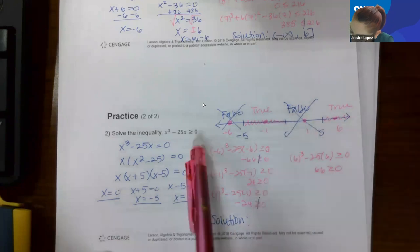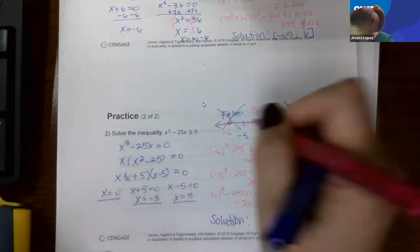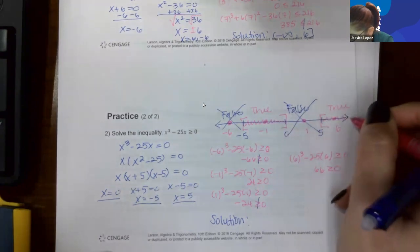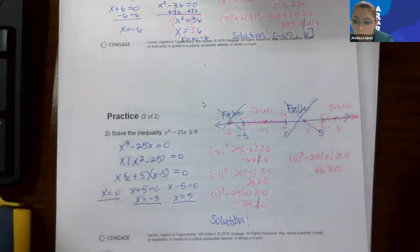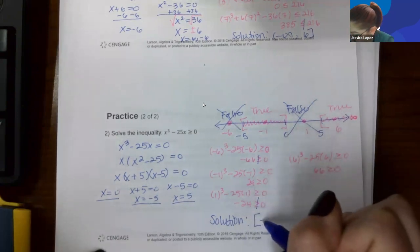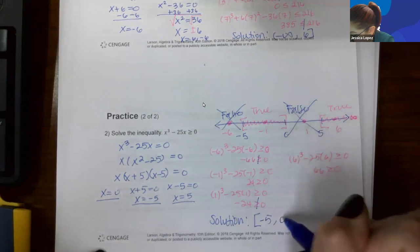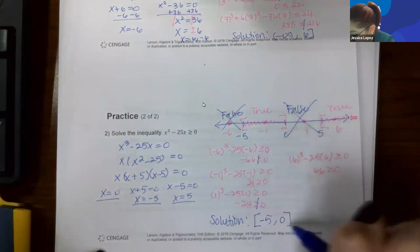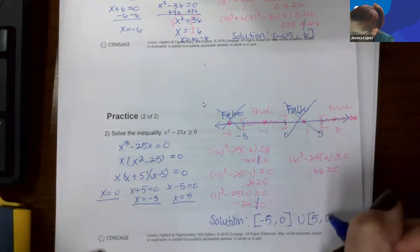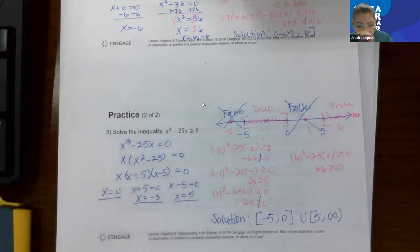Since the inequality has an equal bar, I'll use brackets. Infinities always get parentheses. My solution is from negative 5 to 0 with brackets, union the interval from positive 5 to infinity with a bracket on the 5 side and a parenthesis on the infinity side.